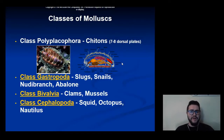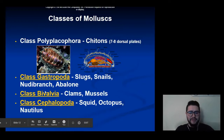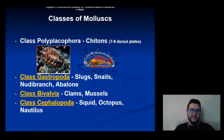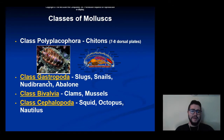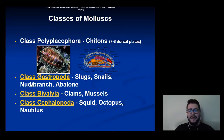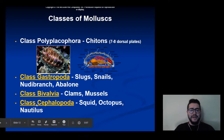There are four classes of mollusks we're going to talk about, but three will get the most detail. There's a class for chitons, but we won't spend much time on those. Most of our time will be used to discuss gastropods — which include slugs, snails, nudibranchs, and abalone — bivalves, which are clams, mussels, oysters and so on, and then cephalopods: squids, octopus, nautilus, and so on.